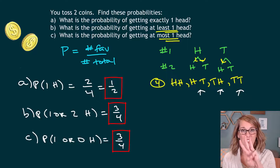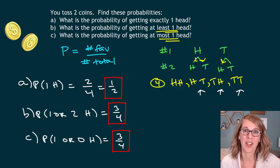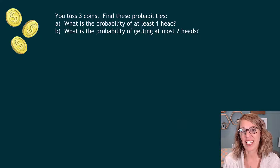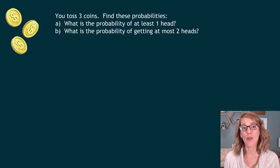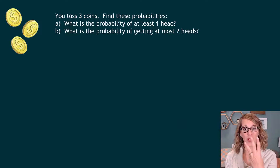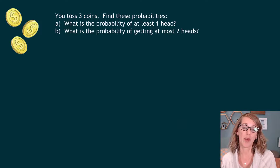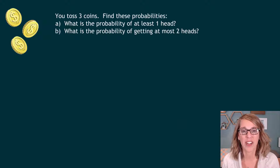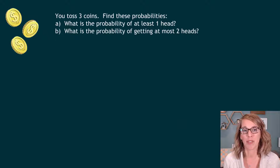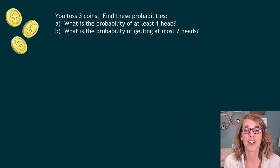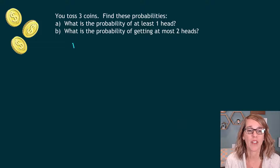Now let's move on to three coins. We're going to look at some at least and at most probabilities with three coins. I could draw a tree diagram branching off from the one before, but instead I want to use the multiplication principle to come up with the total possible outcomes.